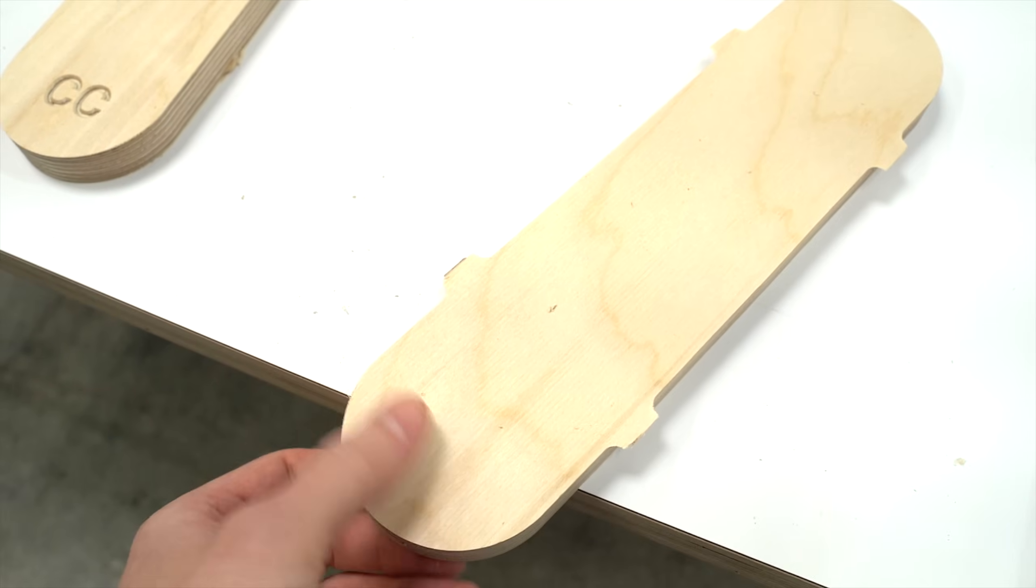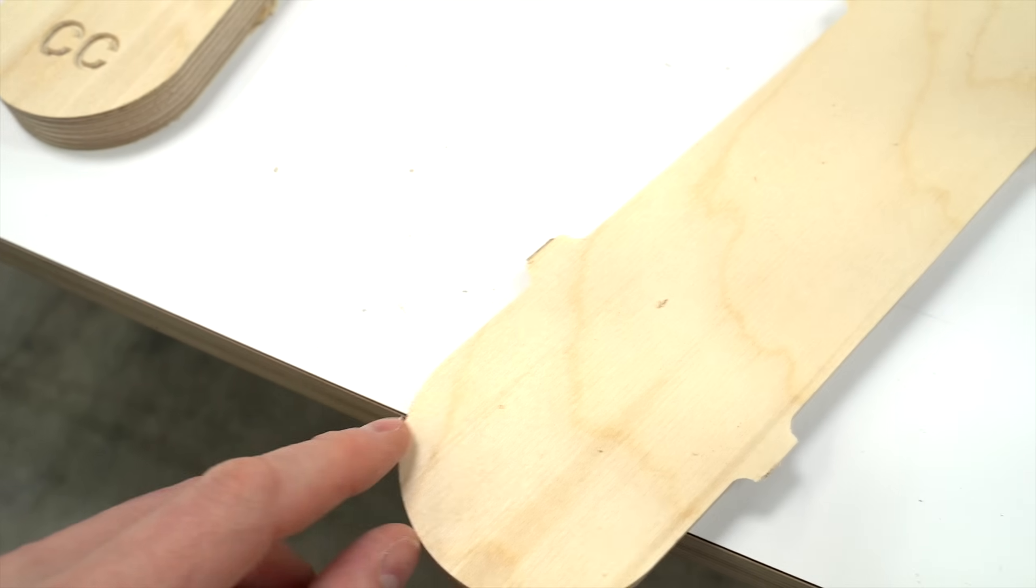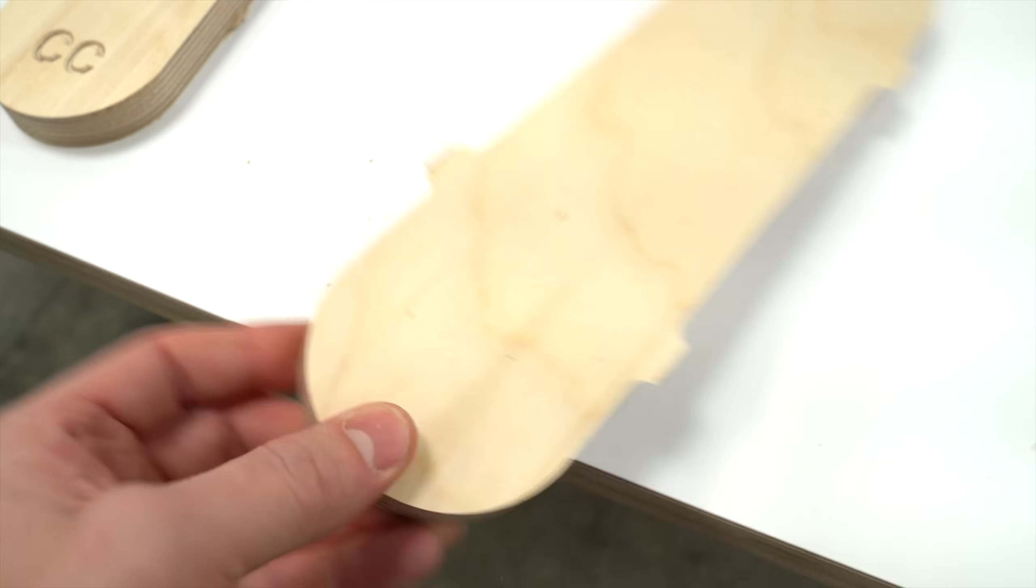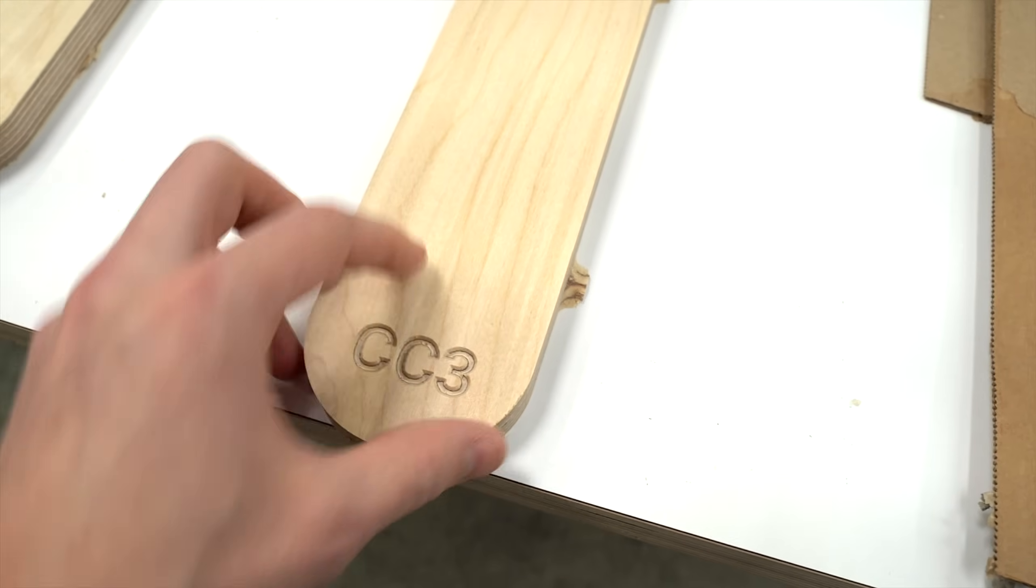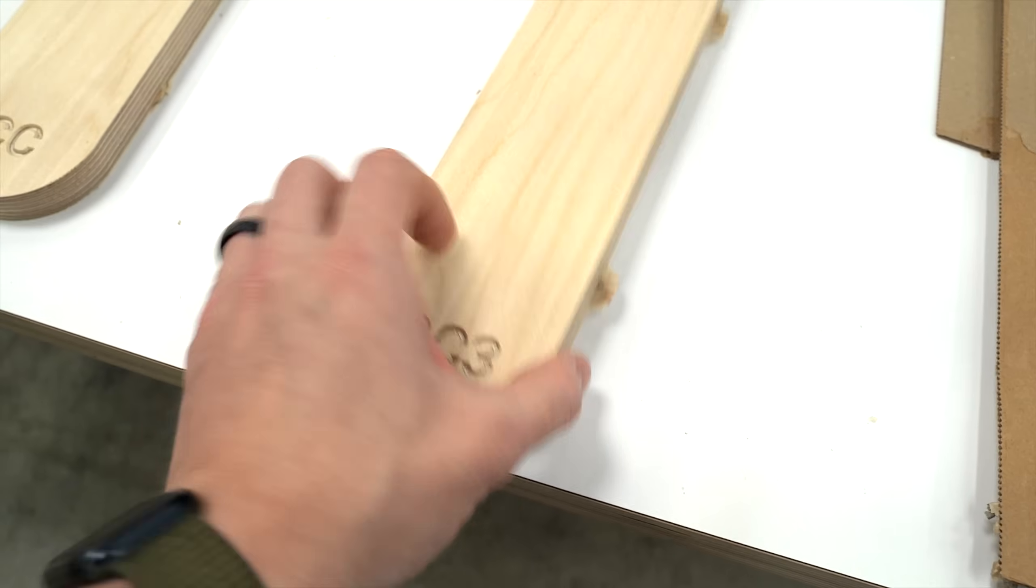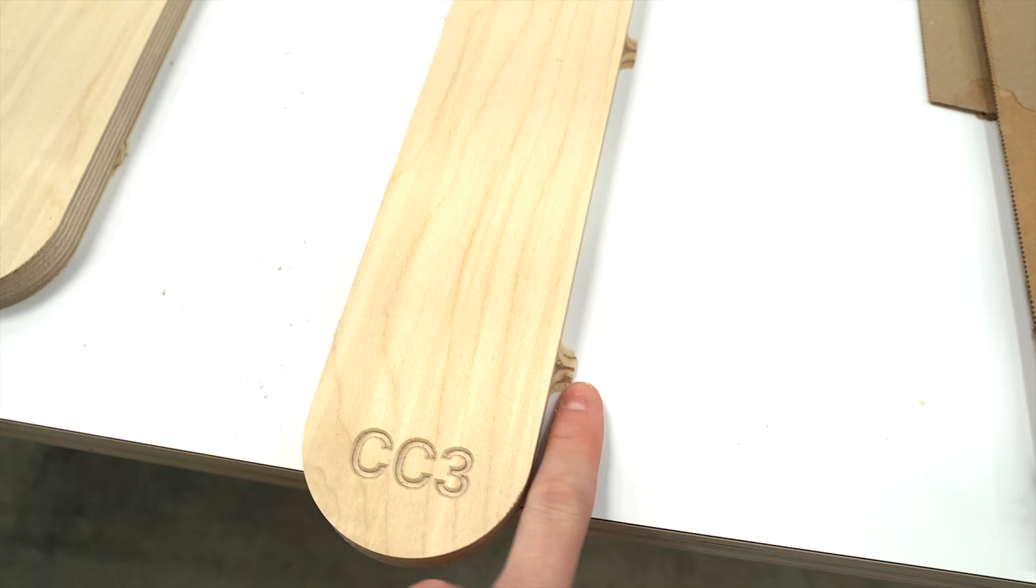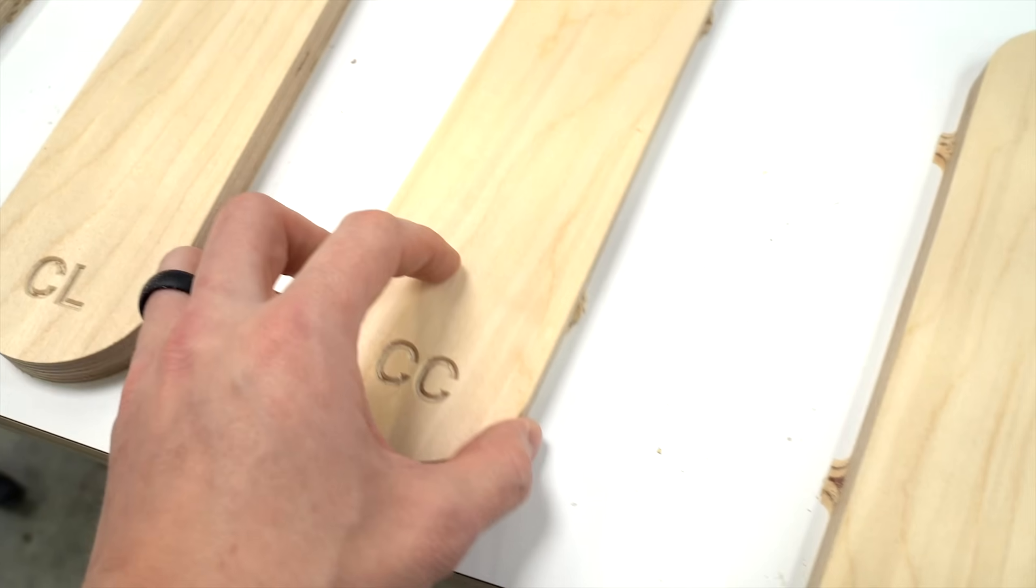Both top and bottom are dang near flawless. There's one tiny little tear right there. And I could go slower around the corners or do multiple passes with a cleanup pass and probably get rid of all of that. And then you're seeing the tabs. That's just to hold it down. We would trim those off.